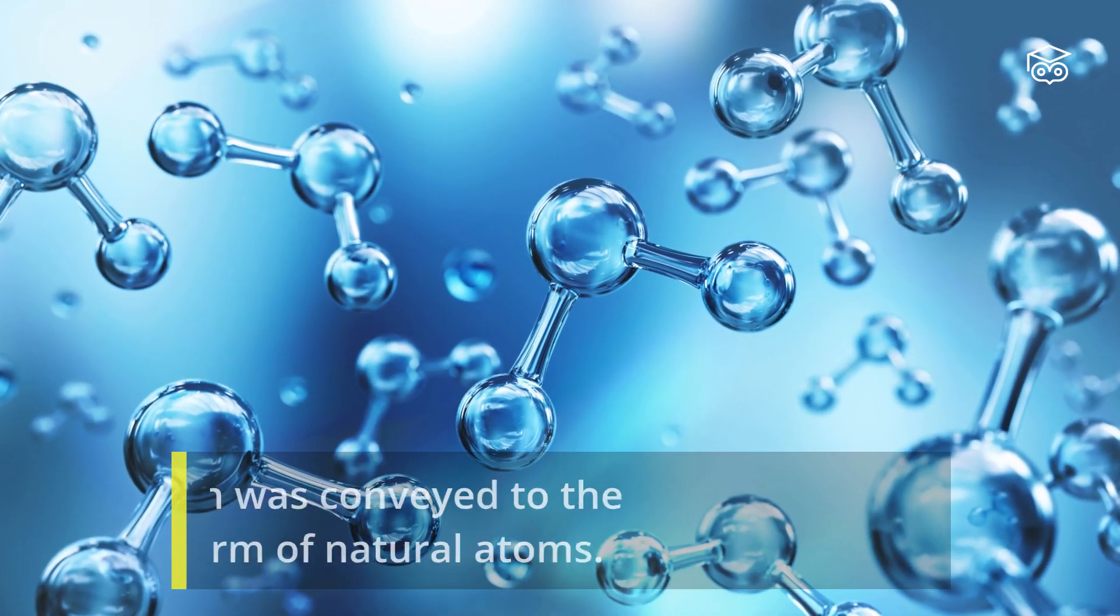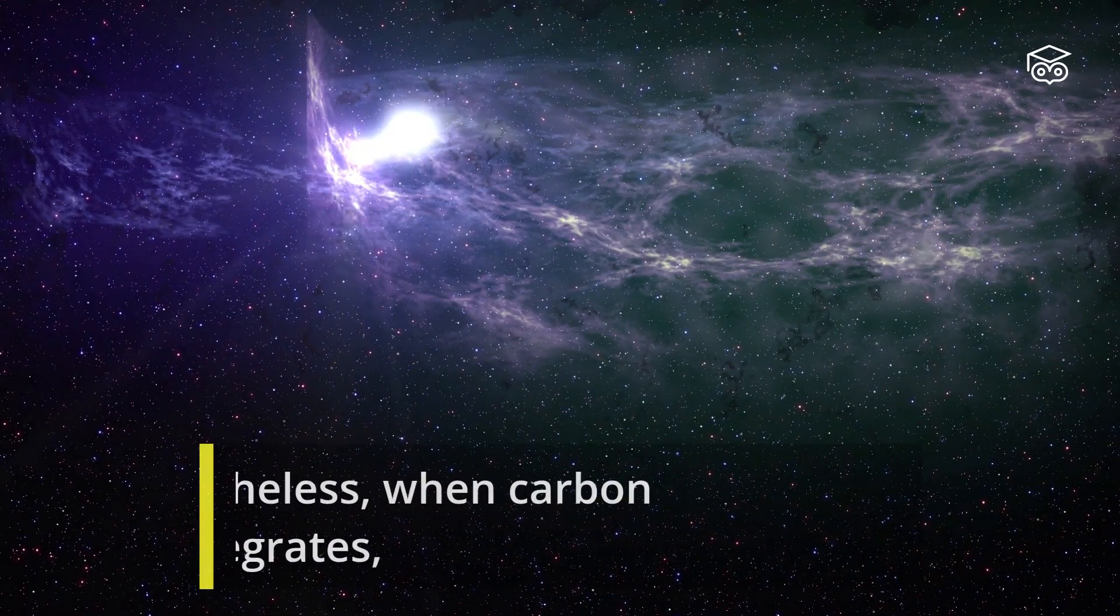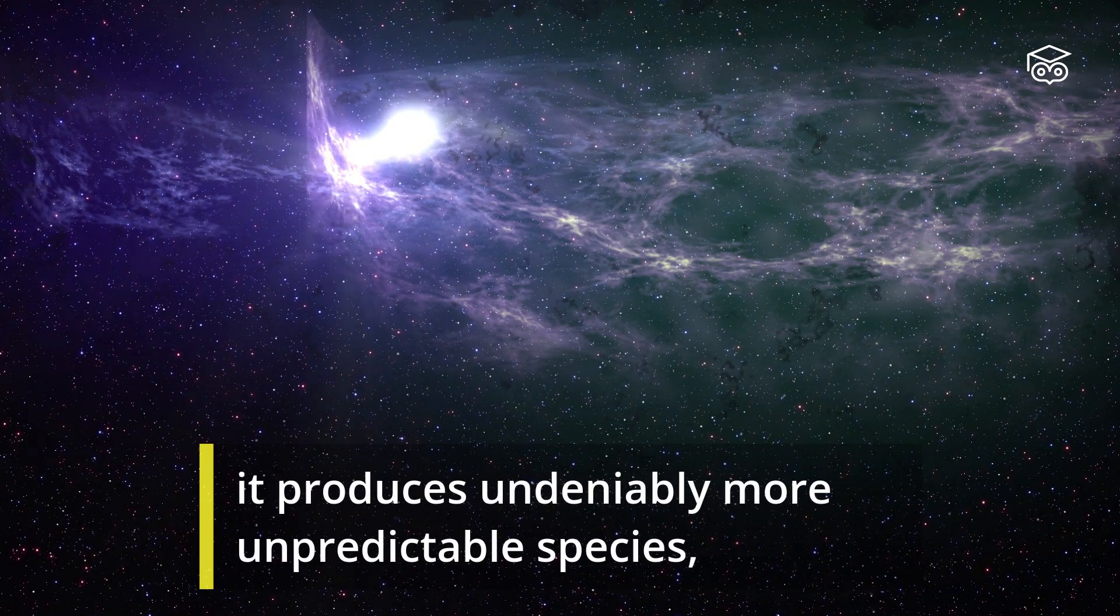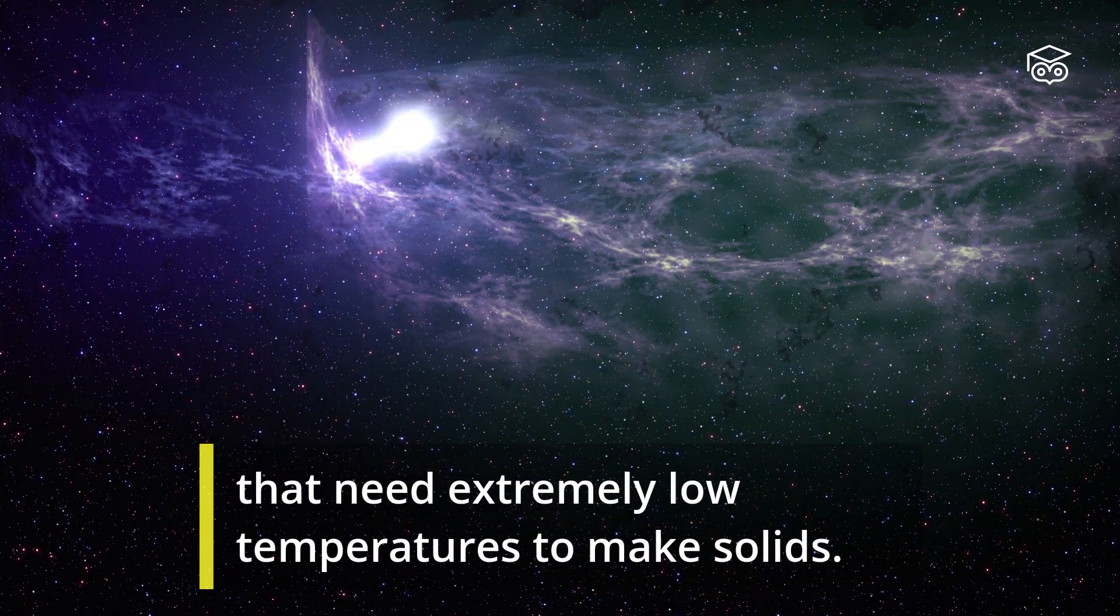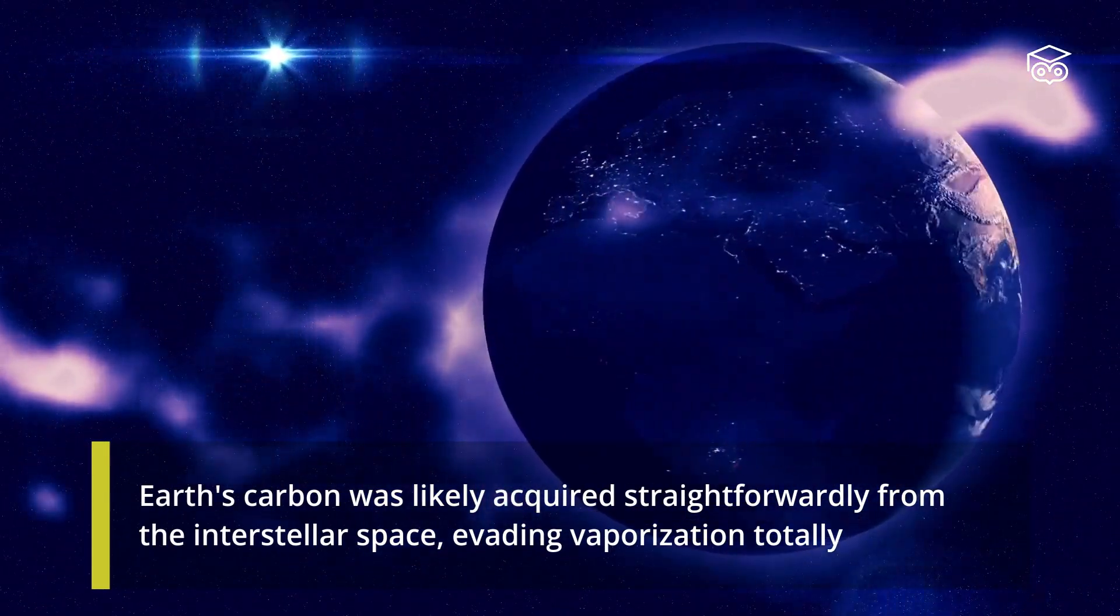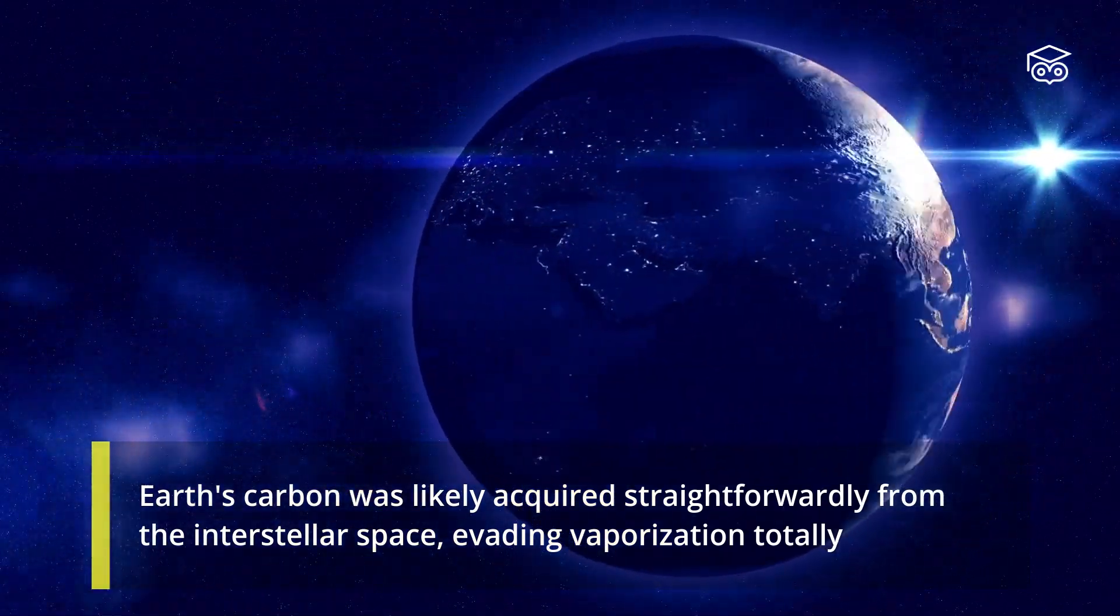A lot of carbon was conveyed to the disk in the form of natural atoms. Nonetheless, when carbon disintegrates, it produces undeniably more unpredictable species that need extremely low temperatures to make solids. Earth's carbon was likely acquired straightforwardly from interstellar space, evading vaporization totally.